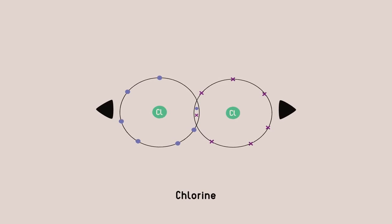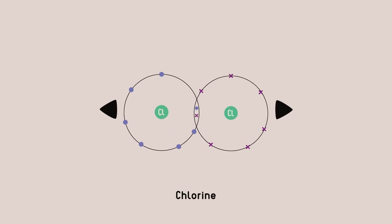Chlorine can't steal an electron from another chlorine, because they are both pulling on the electrons just as hard. Let's look at another example.